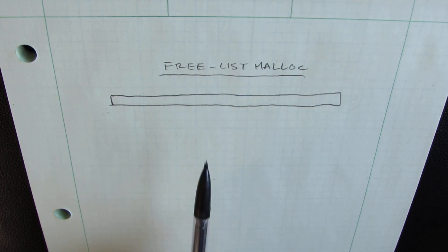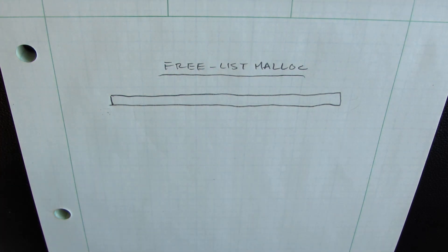But the idea behind freelist malloc is whenever things are allocated and put into this heap, we're going to maintain a linked list of all the free blocks of memory.